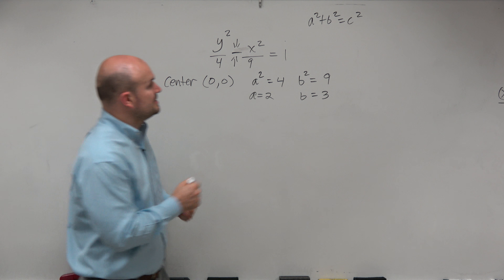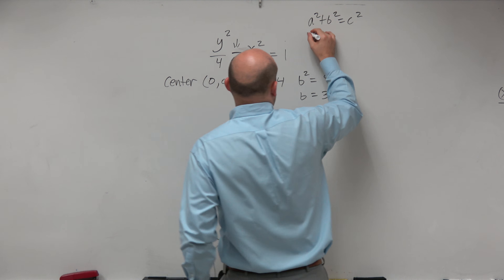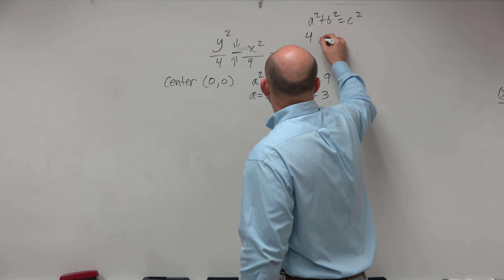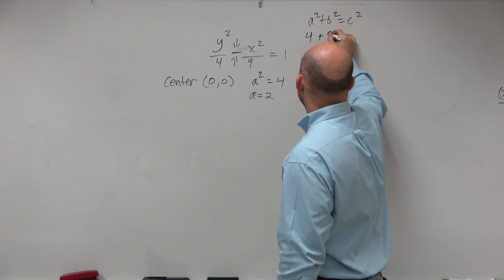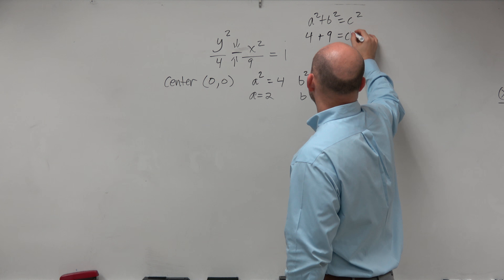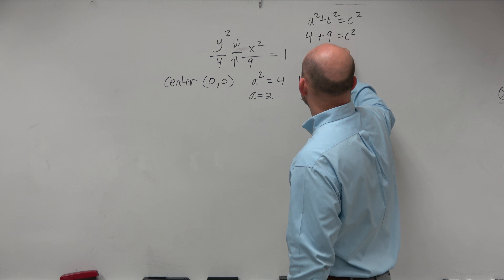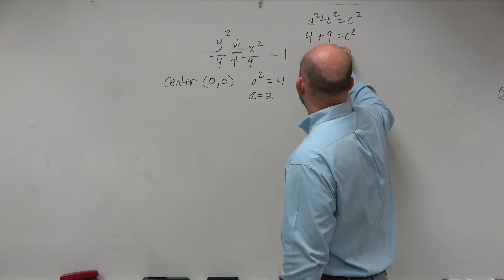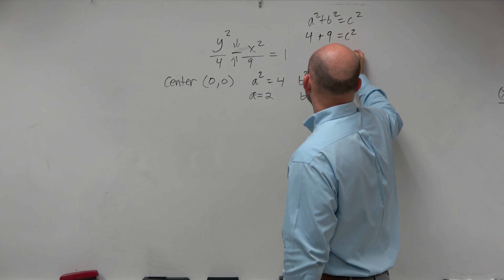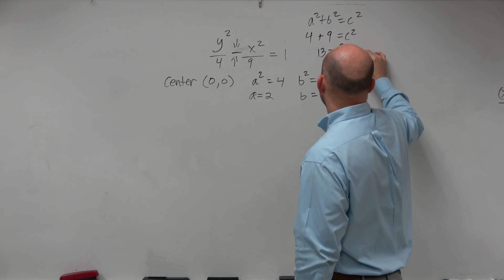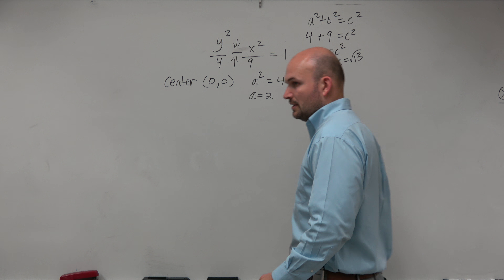Our a squared is 4, b squared is 9, equals c squared. So therefore 13 equals c squared, and c is equal to the square root of 13.